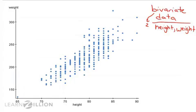You know that a scatterplot plots points by comparing two variables. We call this bivariate data. This is a scatterplot comparing height on the x-axis to weight on the y-axis.